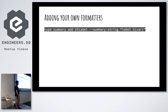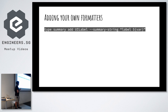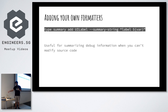For example, for `UILabel` — if you use `po` on a UILabel, you'll see a large string containing its layer, its text, and a lot of information. If you have a lot of labels and want to condense that information, you can add a type summary. When you run `p` on any label, it will just output this label and pass it the actual label instance. I'll show a demo of this in a bit.